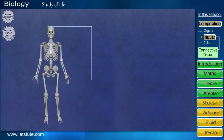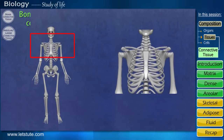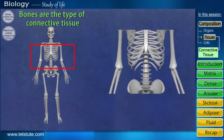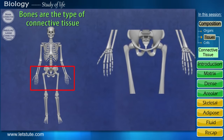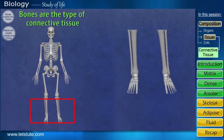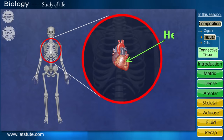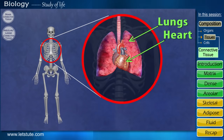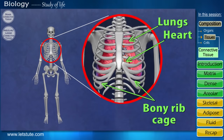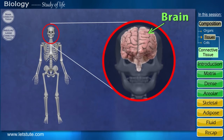Our bones form the framework of our body. These bones are also a type of connective tissue — they support and hold our internal organs together. For example, the heart and lungs are supported by the bony ribcage in our chest, and our skull holds and supports our brain.